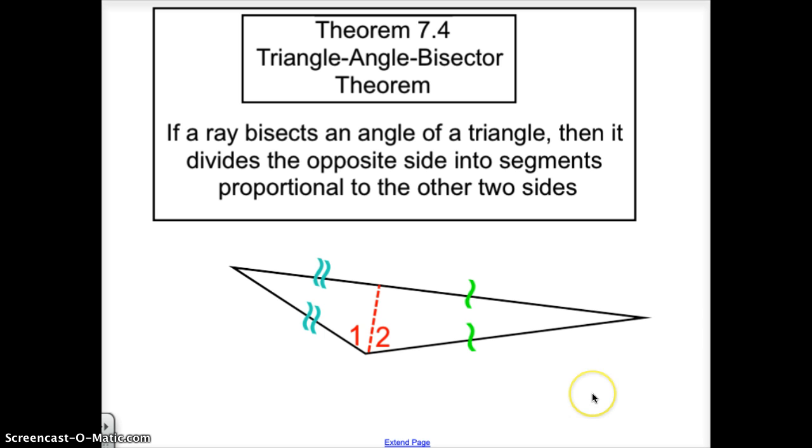The triangle angle bisector theorem says that if a ray bisects an angle of a triangle, then it divides the opposite side into segments proportional to the other two sides. What that means is that if I choose this vertex to bisect the angle, the side opposite that bisected angle is now broken into two similar proportions.